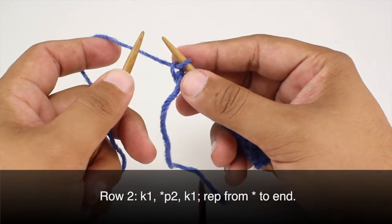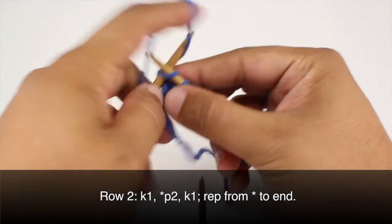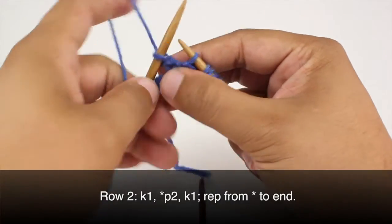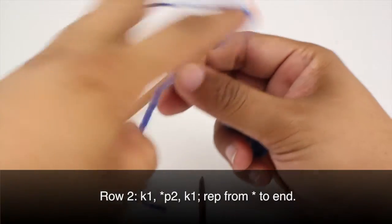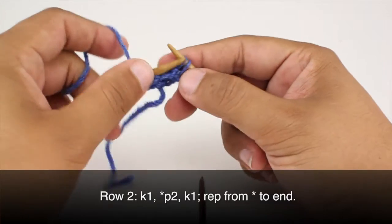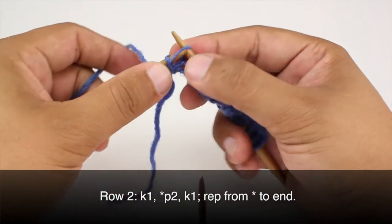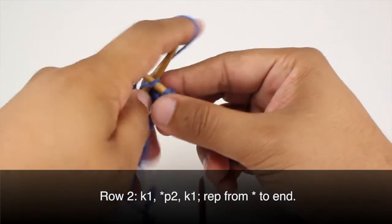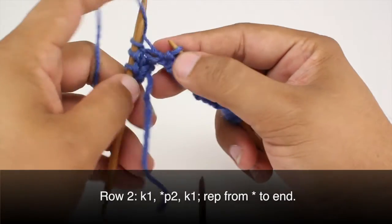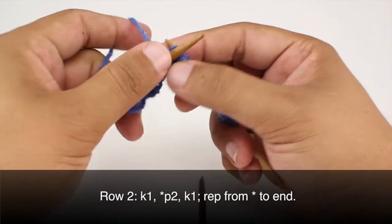Row 2: We're going to begin by knitting 1. Then we'll start our repeat by purling 2. And we're going to finish our repeat by knitting 1. So we'll continue repeating the purl 2 and knit 1 until the end of the row.